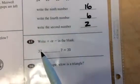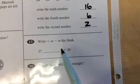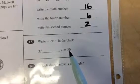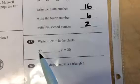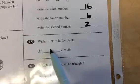Write plus or minus in the blank. 37 plus or minus 7 equals 30. Well, it's smaller, so I already know this number is smaller than this number, so it's subtraction, right?